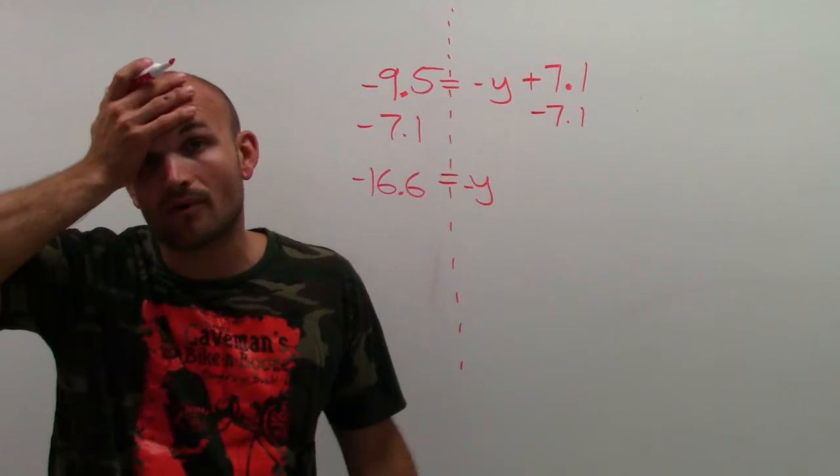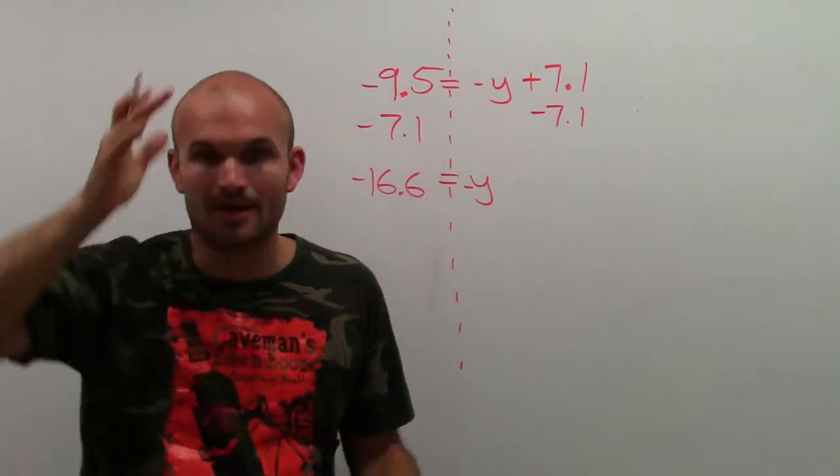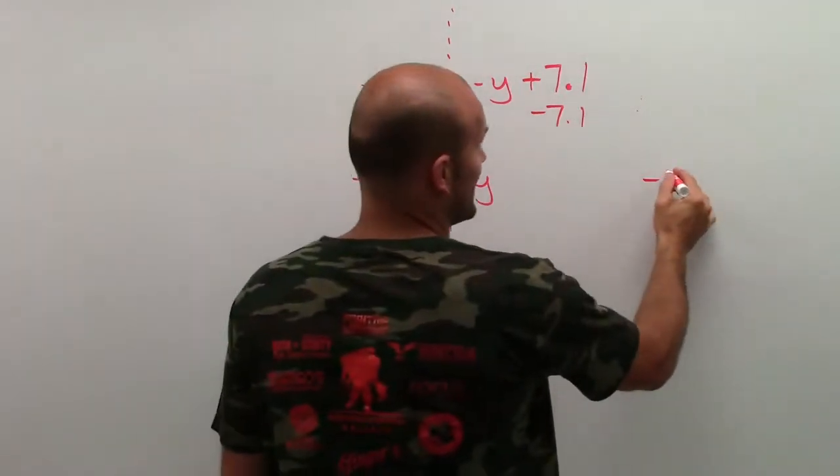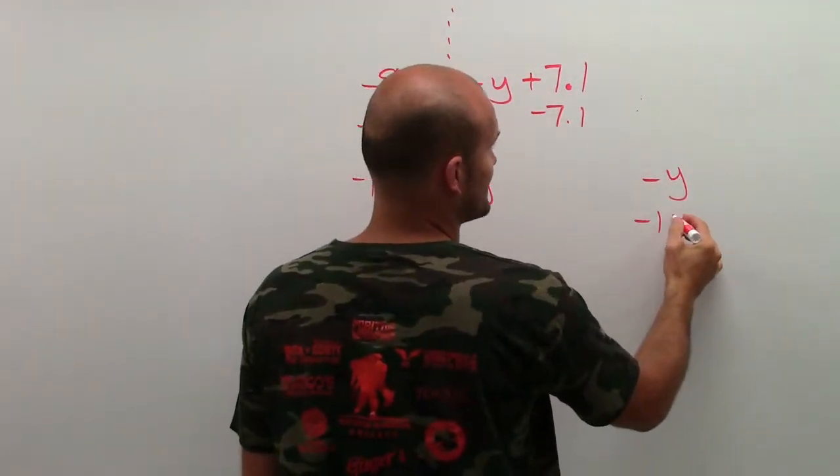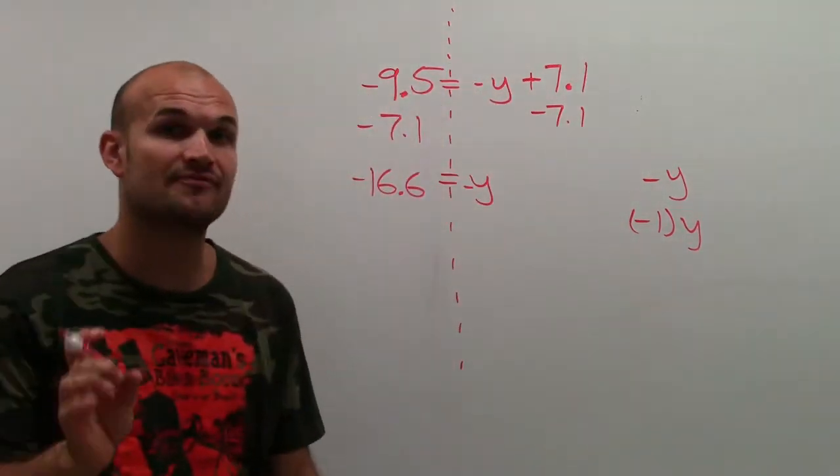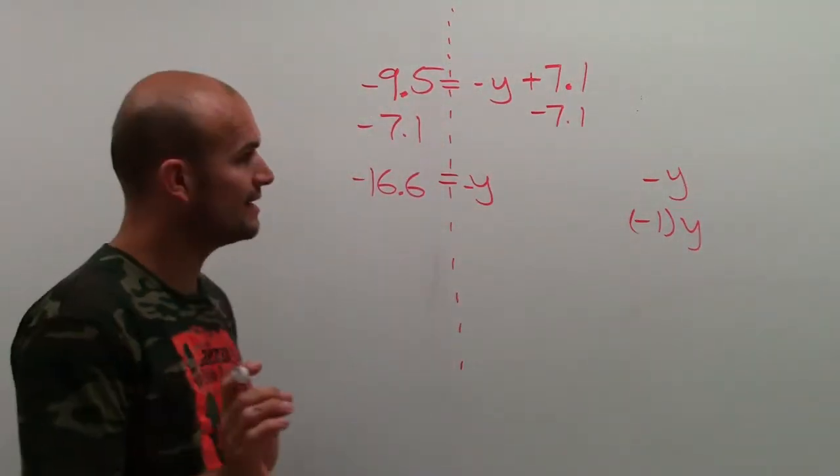And this is where students are like, what do I do here? What is this negative y? Remember, the multiplication property of negative 1 states that negative y is the same thing as negative 1 times y. All right? It's a very important property for you to understand.